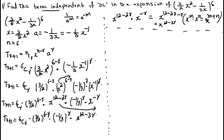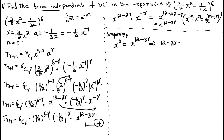Next step: comparing. Since the question asks for the term independent of x, compare x⁰ = x^(12-3r). Since bases are equal, powers must also be equal: 12 - 3r = 0, which implies 3r = 12, giving r = 4.